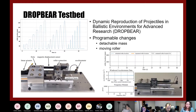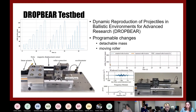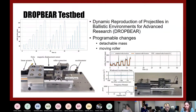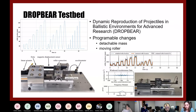The work discussed here all focuses on the DropBear testbed, which stands for Dynamic Reproduction of Projectiles in Ballistic Environments for Advanced Research. This testbed features two programmable changes that simulate high-rate dynamic events: a detachable mass and a moving roller. The moving roller is used in the rest of this presentation. The roller moves back and forth along the beam, its location tracked in real time. An accelerometer on the far end picks up acceleration data, which is windowed and then transformed into the frequency domain.